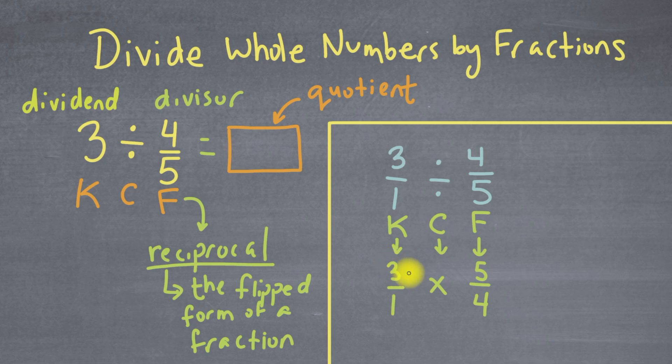Here we're going to have 3 times 5, which equals 15. And then I'll have 1 times 4, which equals 4. So our answer here is 15 over 4, but that's improper.